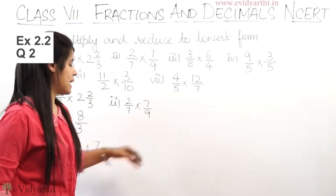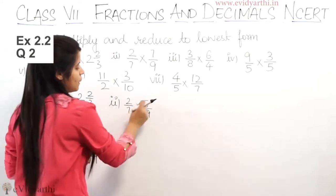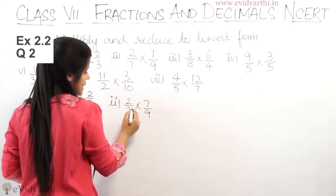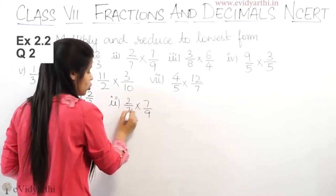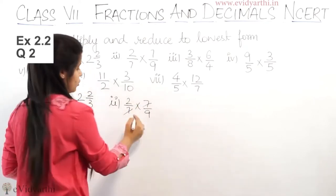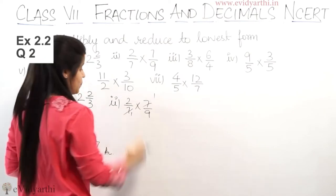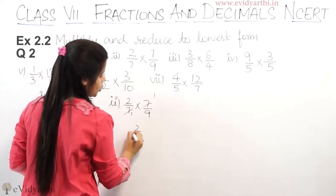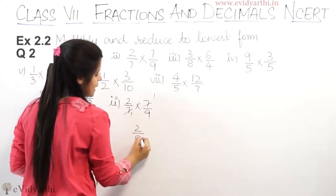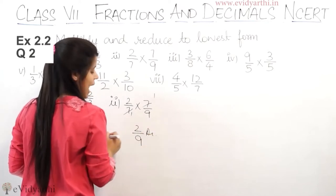We have 2 by 7 into 7 by 9. So you will know that you will cut. 7 by 7 cut. So these are 2 into 1, so 2 into 1 is 2. 1 into 9 is 9. This is the answer.